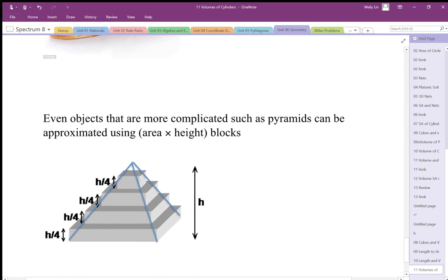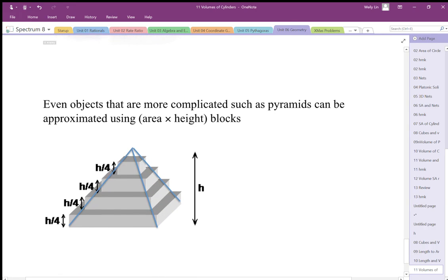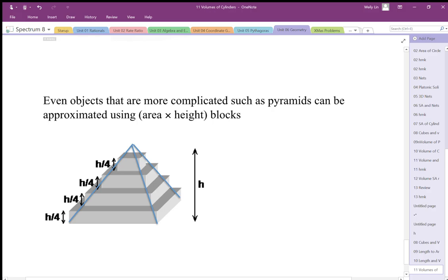And even more complicated objects, like this pyramid-looking shape, as long as I can take that area and give it some thickness, we can get the volume of that stepped object, and in essence, it starts looking like the volume of a pyramid.